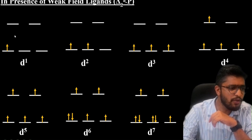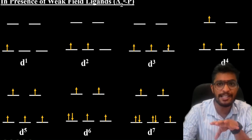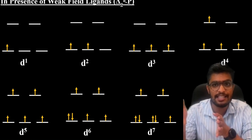D1 configuration: T2G1, asymmetrical distribution of electrons. Again, d2 is asymmetrical.